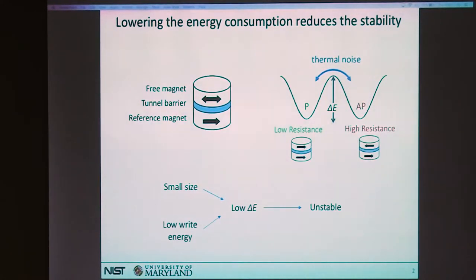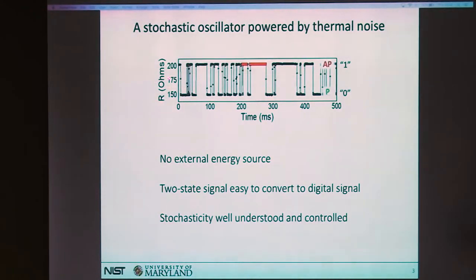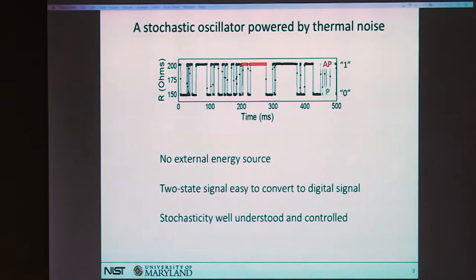Our non-volatile memory actually becomes a stochastic oscillator. Here you can see an extreme case of thermal instability — a measurement of resistance versus time showing the two states, anti-parallel and parallel, switching randomly back and forth. So we might ask: what can we do with such stochastic devices?